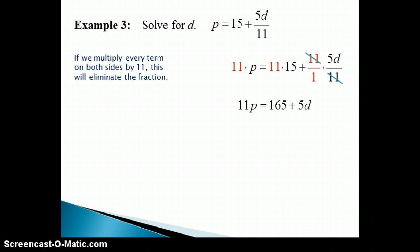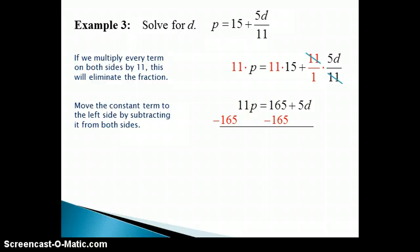Simplifying gives us a much nicer equation of 11P equals 165 plus 5D. Both sides are simplified, so we're ready to isolate the D term to one side. We can do this by subtracting 165 from both sides to undo the addition.